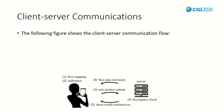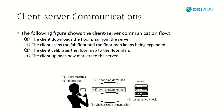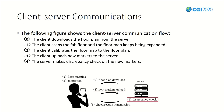The client-server communication flow is as follows. First, the client downloads the predefined floor plan from the server — this is done only once at the beginning. Then the client creates a floor map by scanning markers through Visual SLAM. While scanning markers, we try calibration between the generated floor map and the downloaded floor plan. If calibration is successful, the information of markers in the floor map is uploaded to the server. The server uses the floor plan's marker data and floor map's marker data to check for discrepancies and saves the results.